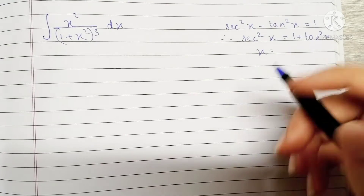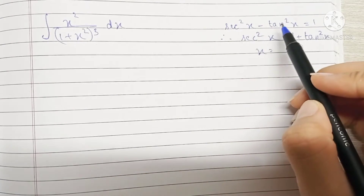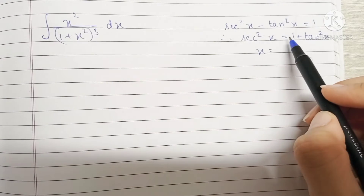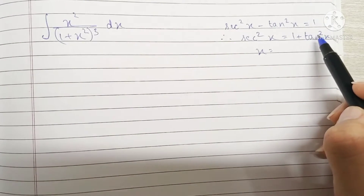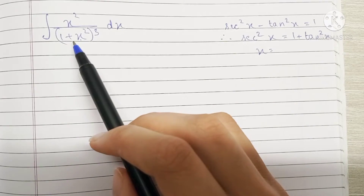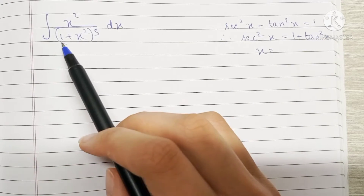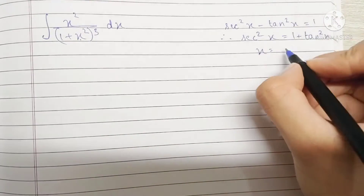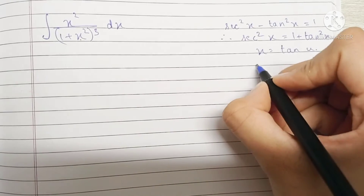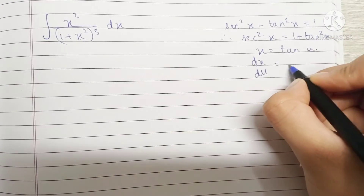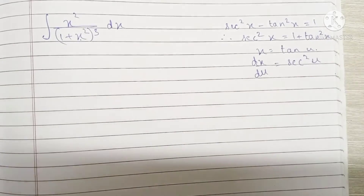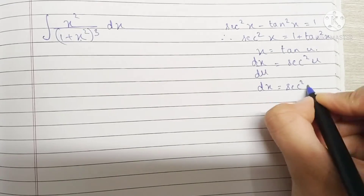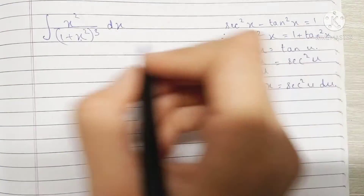First of all, we have the trigonometric identity sec²x minus tan²x is 1, which means that sec²x equals 1 plus tan²x. We can observe that we have something similar in the denominator — we have 1 plus the variable squared. So if I place that variable as tan u, I would have dx/du which becomes sec²u, and dx thus becomes sec²u · du.